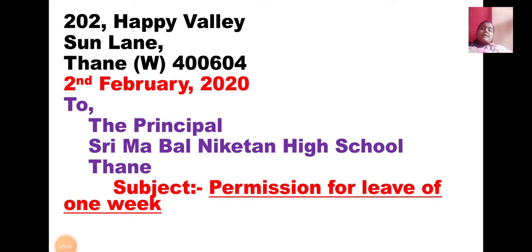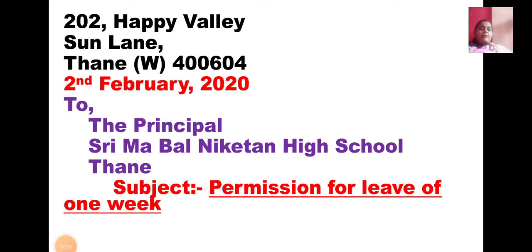The date also has a particular format. For example: 2nd February 2020. Write the name of the month in full form - do not write 'Feb', that is wrong. Any month you write, you must write the full name. Then give a comma and write the year in full - write '2020', not just '20'. So the format is: date, then full name of month, then a comma, then the full year like 2020.